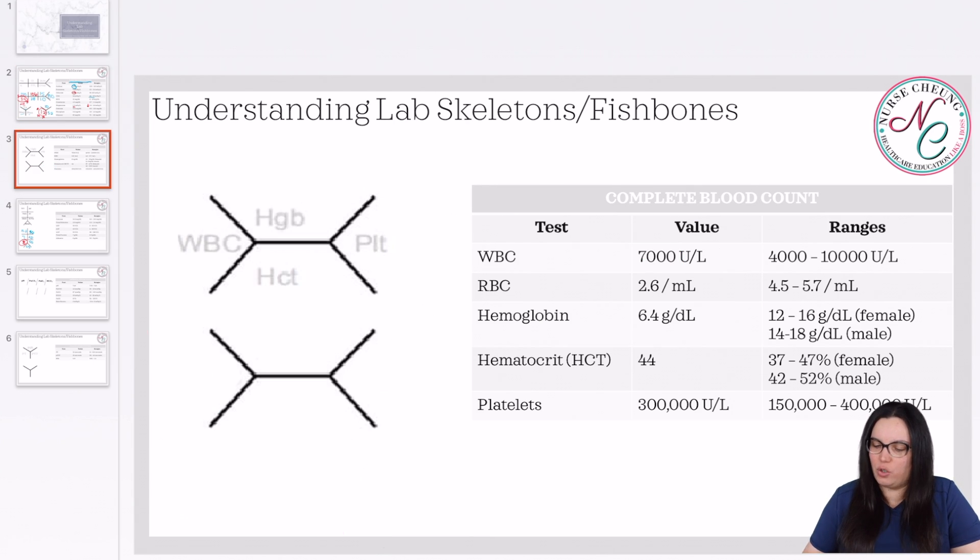So next we're going to move on to our complete blood count. And this is really important, especially when we have patients going for procedures that may affect them being able to do the procedure based on these values. So again, we have our white blood cells, our hemoglobin, hematocrit, and platelets. And we begin by looking at our normal and abnormals.